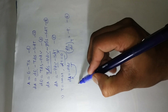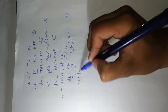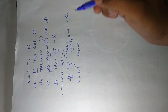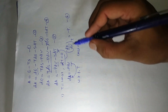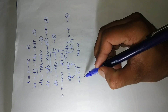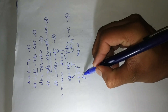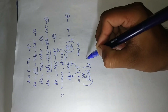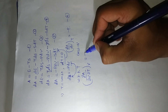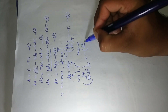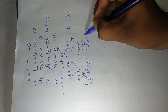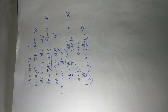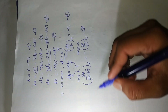Now we are going to differentiate equation number 6 with respect to temperature at constant volume. Then equation 6 becomes: on the left-hand side, the double differentiation of A with respect to volume and then temperature at constant volume, is equal to minus the differentiation of P with respect to temperature at constant volume. This is equation number 7.